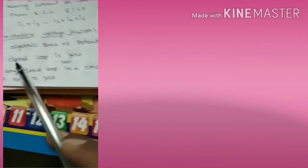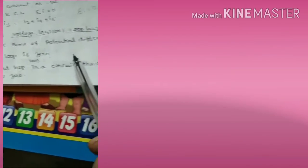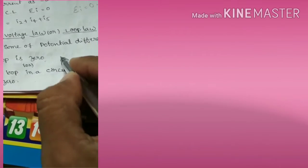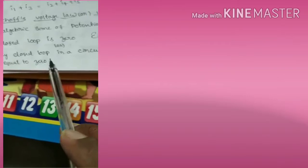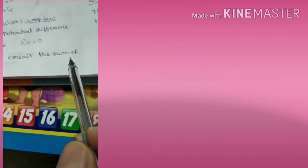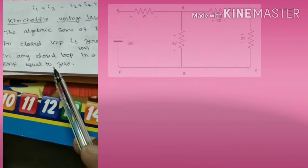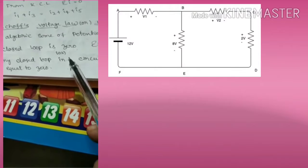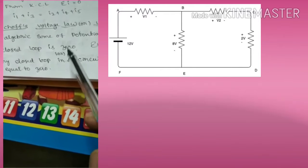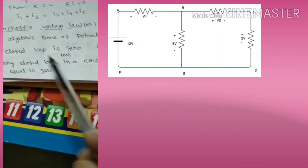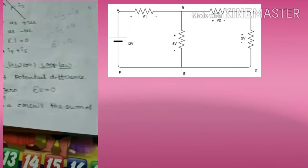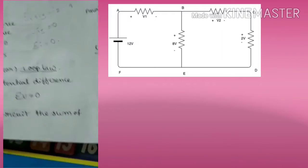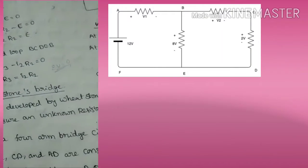Kirchhoff's Voltage Law states that the algebraic sum of the potential differences in a closed loop is zero — that is, Sigma V equals zero. Another way to state it: in a closed loop, the sum of the EMFs is equal to the sum of the potential drops.